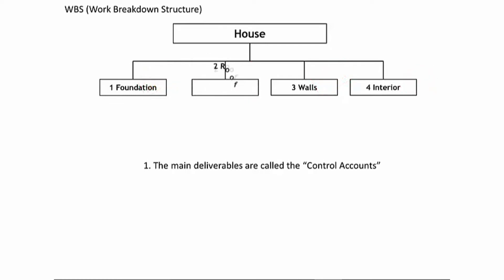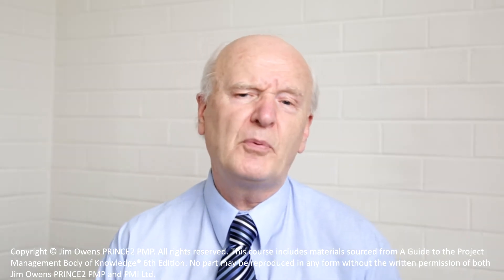You might think I've made a mistake by placing the roof before the walls, but I haven't. The key lesson here is that the Work Breakdown Structure is not time-ordered. It can't be, because it won't be until we create the schedule that we'll know for sure which order the products will be delivered. When I create a Work Breakdown Structure, I generally organize it in approximate delivery order — but in obvious cases like this, common sense applies.